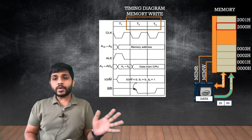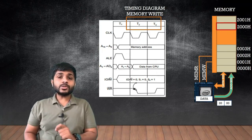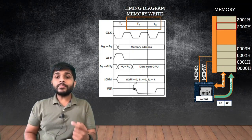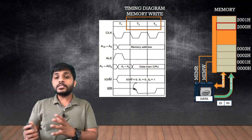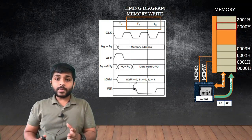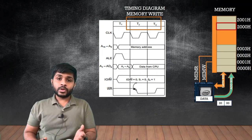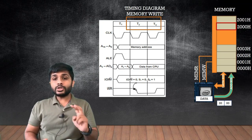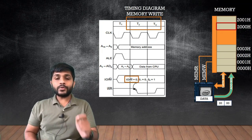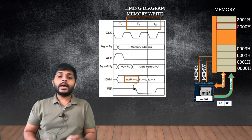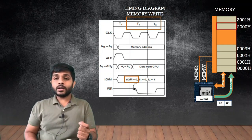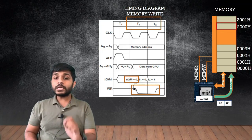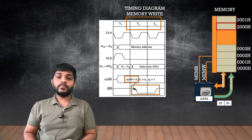If you remember, in the generation of control signals, the microprocessor does not have a memory write signal directly. The processor has to generate the memory write signal by combining different signals such as IO/M-bar and write-bar. To generate the memory write signal, the processor will combine these two signals: IO/M-bar will be zero and the value of write-bar will also be low. When the microprocessor combines these two signals, the memory write signal will be generated.